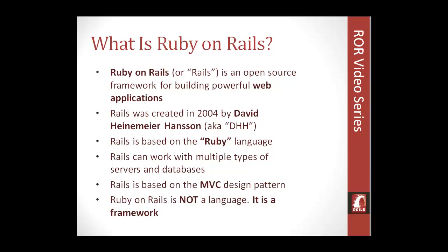Rails is based on the MVC design pattern, which is Model-View-Controller. You're going to hear that a lot throughout this series. It's one of the most popular and best, in my opinion, design patterns available. What it does is basically separate what the user sees — the HTML and the presentation — from the controllers, the routing system, and also the business logic, which is in the model, and which usually consists of database queries.